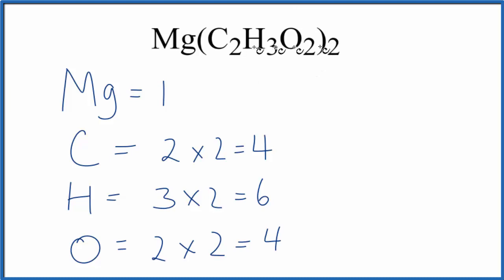If we want to find the total number of atoms for magnesium acetate, we just add these up. Six plus four is ten, plus four, fourteen, fifteen total atoms in magnesium acetate.